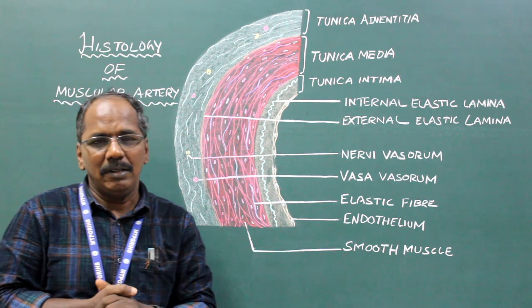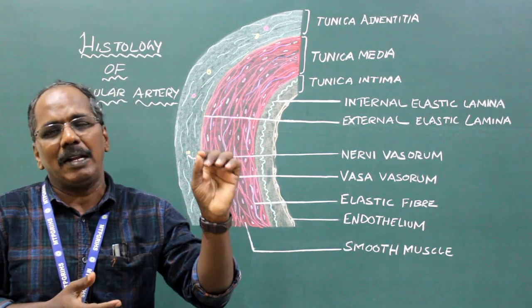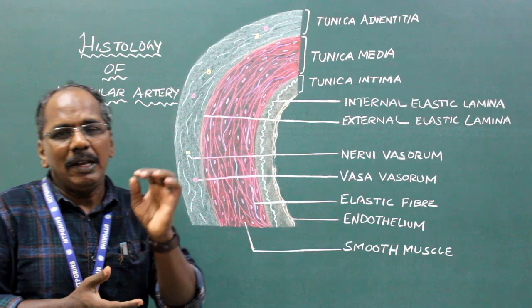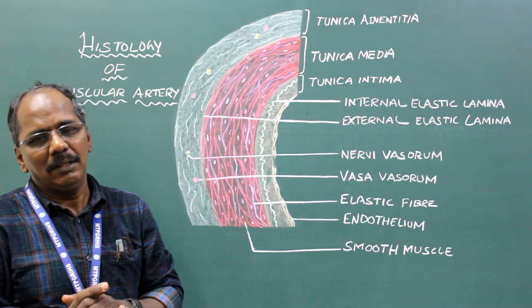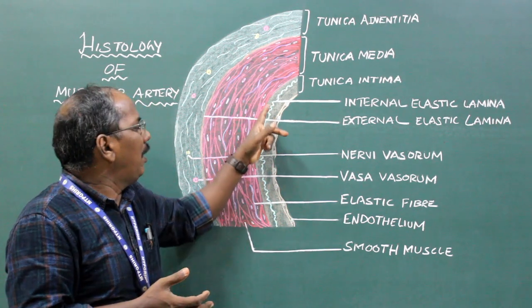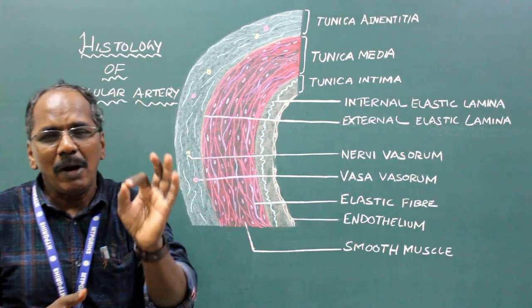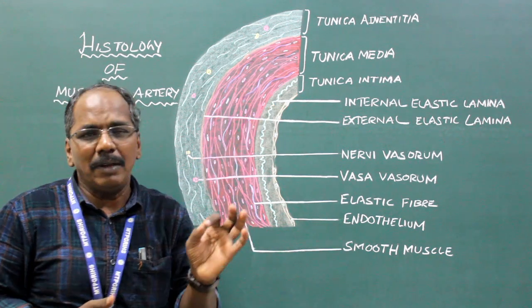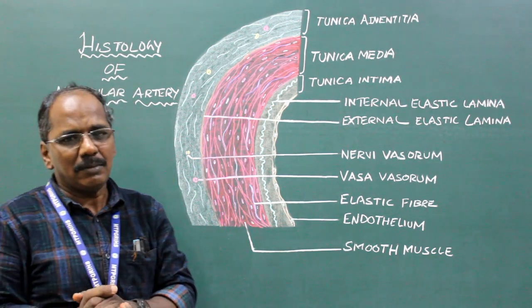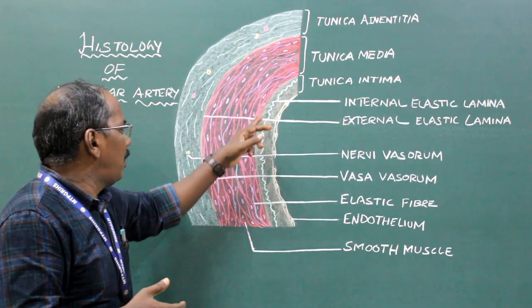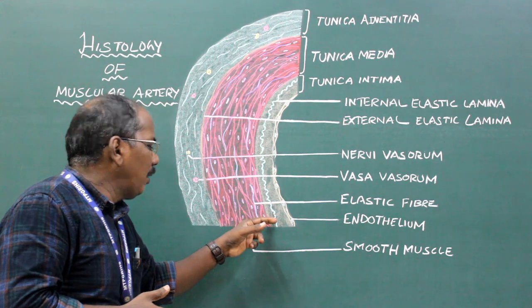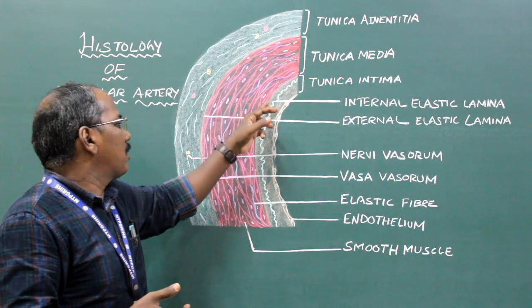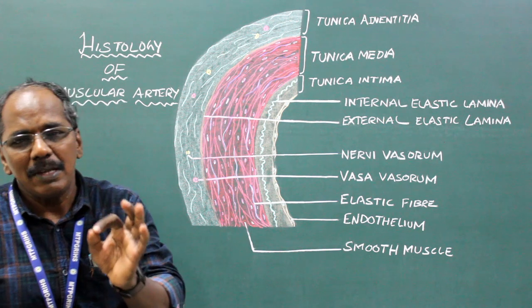The difference between large or elastic artery and medium or muscular artery: In large or elastic artery, the internal elastic lamina in the Tunica Intima is poorly defined. There is presence of sub-endothelial content in large or elastic artery, whereas there is absence of sub-endothelial content in the medium-sized or muscular artery.